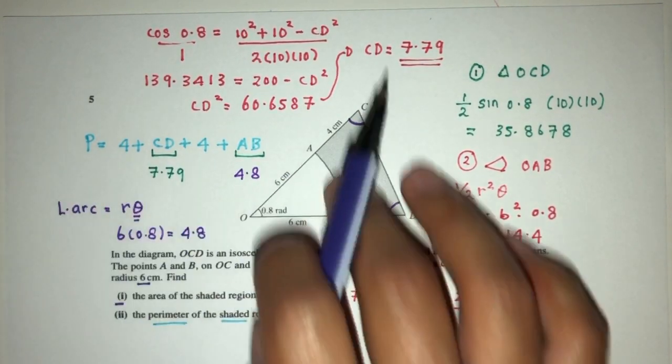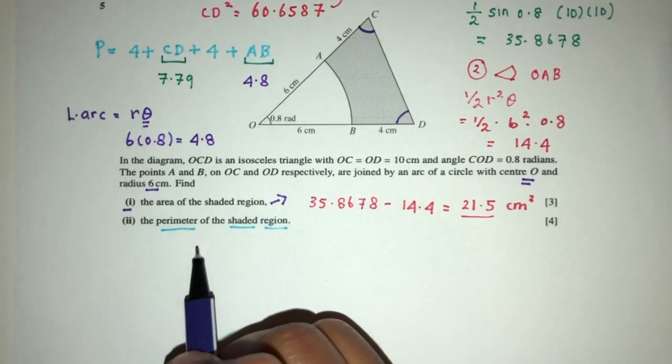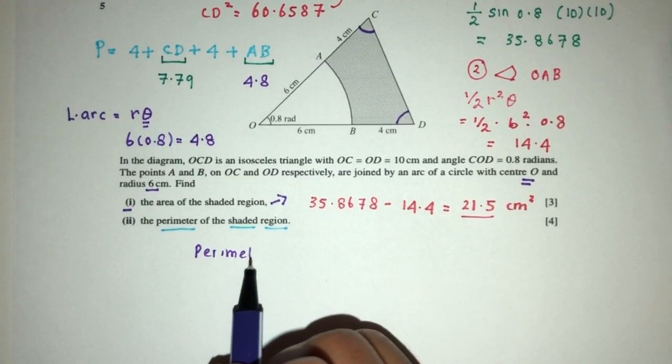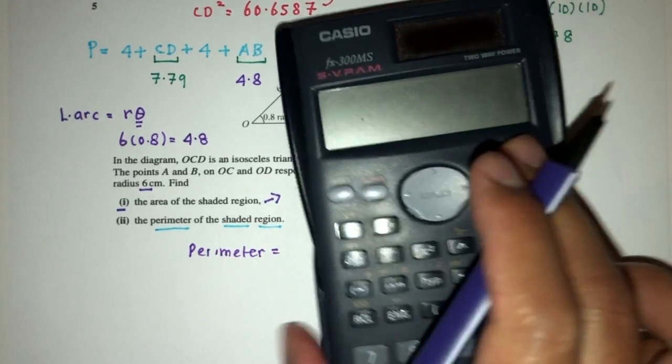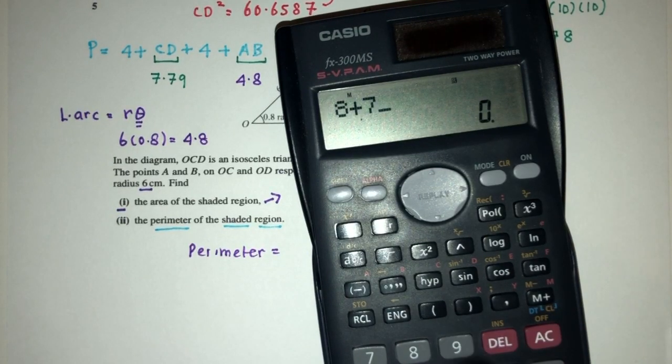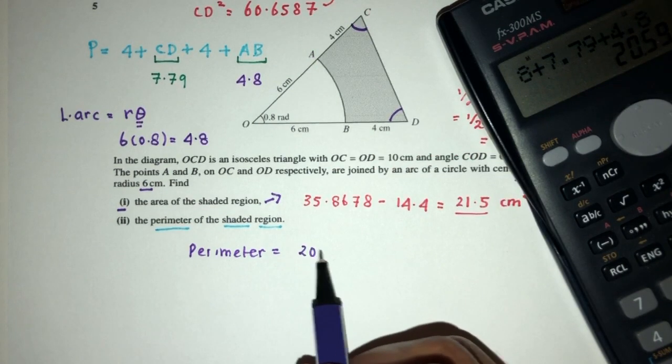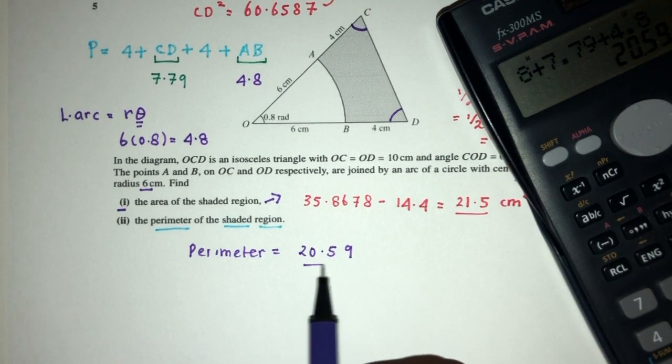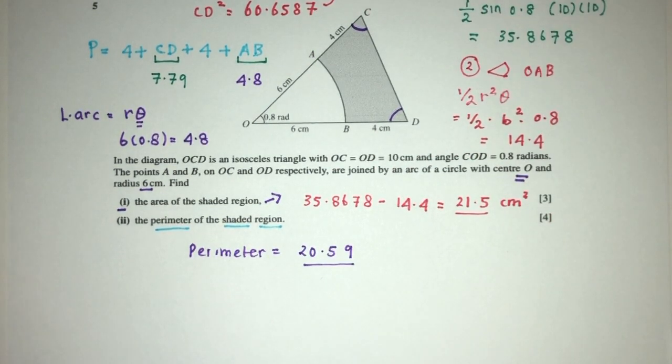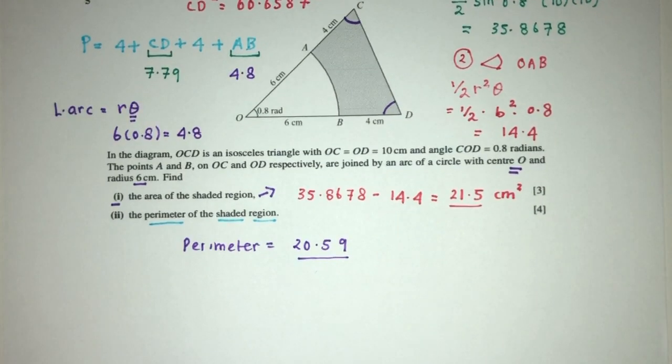So let's add everything together to find the value of our perimeter. 4 plus 4 is 8 plus 7.79 plus 4.8, that should be 20.59. So that will be part 2 of this question in regards to circular measure.